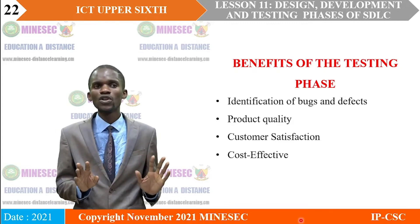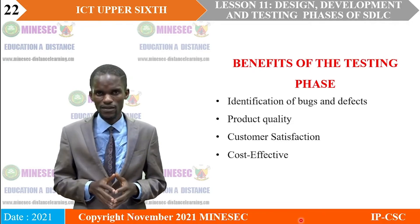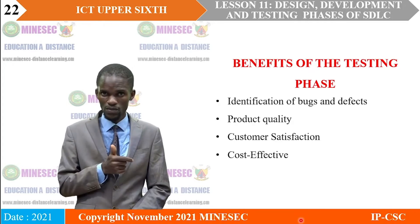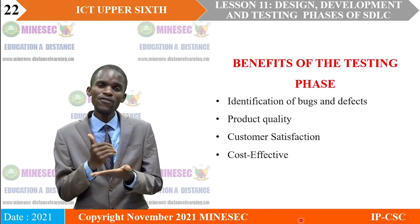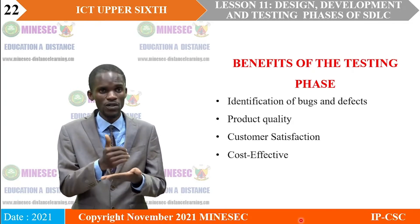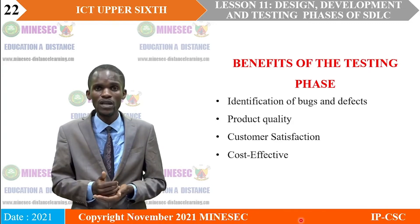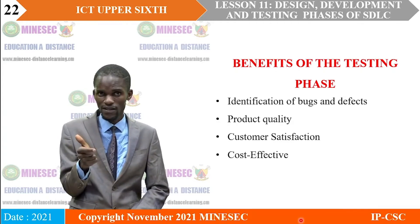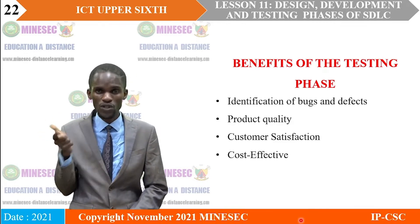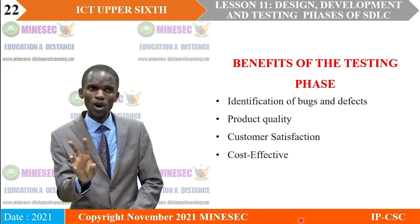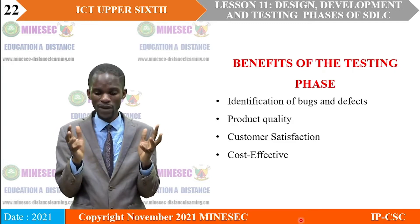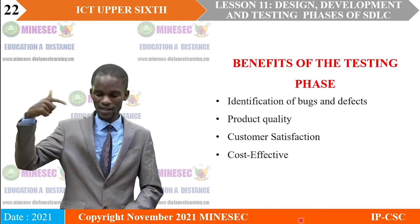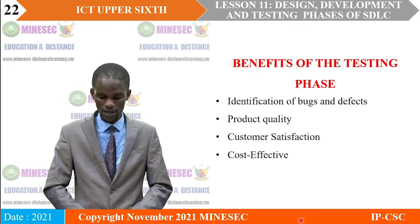Testing helps us to identify bugs and defects. Bugs are software errors — in the course of writing code, errors may occur. There are different kinds of errors: logical errors and syntactic errors, which need to be corrected. The identification of these errors and defects, such as an incorrect choice of programming language, helps us avoid problems occurring at the next phase, which is the implementation phase. We identify software errors and defects to avoid problems at implementation.